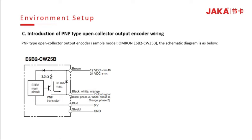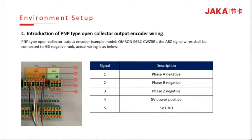The third type is the PNP type, open collector output encoder. The schematic diagram is as below. Pin 1, 2, and 3 are for phase A, B, and Z negative connection. Pin 4 and 5 are for 5V power supply connection.